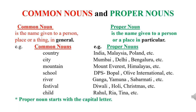City — city is a common noun. But if we talk about Mumbai, Delhi, Bengaluru, it means we are talking about the particular cities. Mountain — mountain is a common noun. But if we talk about Mount Everest, Himalayas, it means we are talking about the particular mountain ranges. So these are proper nouns.